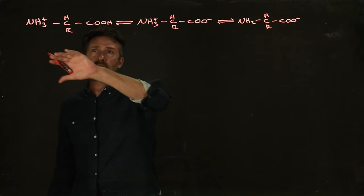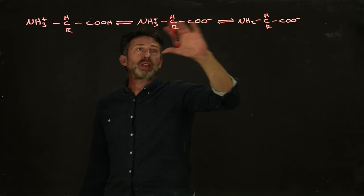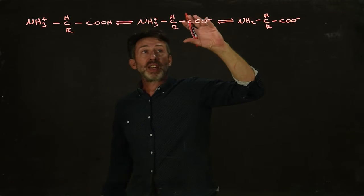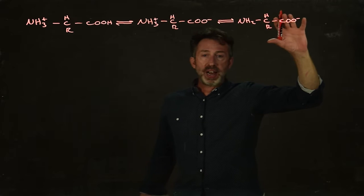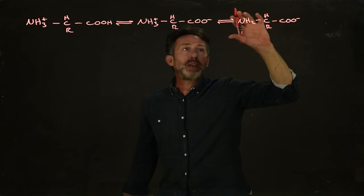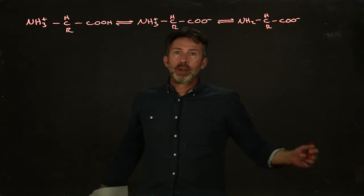We've just got two groups that can ionize. As we go across in this direction, the first thing that happens is the carboxylic acid group ionizes. Then as we move further to the right, we see that the amino group has ionized as well, or deionized if you like.